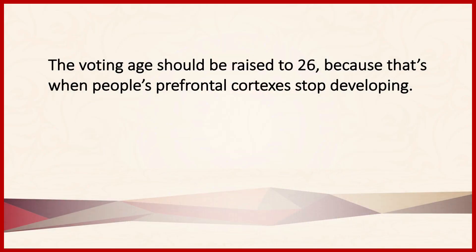The first example reads: the voting age should be raised to 26 because that's when people's prefrontal cortexes stop developing. The main claim here is that the voting age should be raised to 26. That's not obviously true — it requires evidence to try to establish its truth, and that's what makes this an argument.